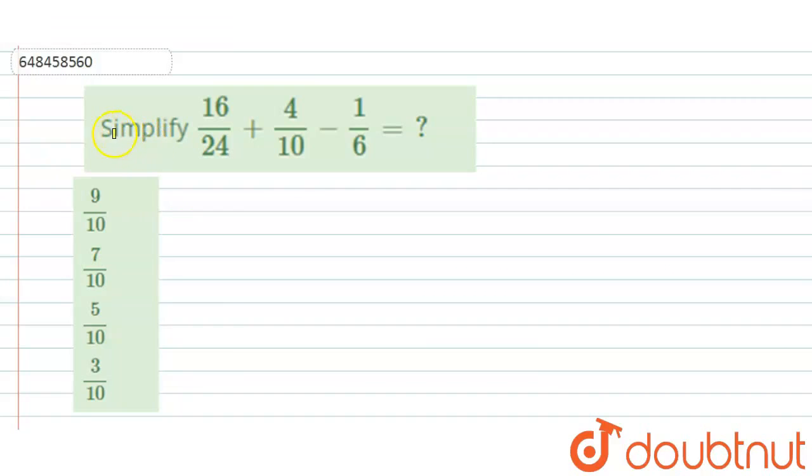Hello everyone, in the given question, we need to simplify the equation that is 16 by 24 plus 4 by 10 minus 1 by 6 and we need to find its value. And further, we are given 4 options here: Option A, B, C and D.